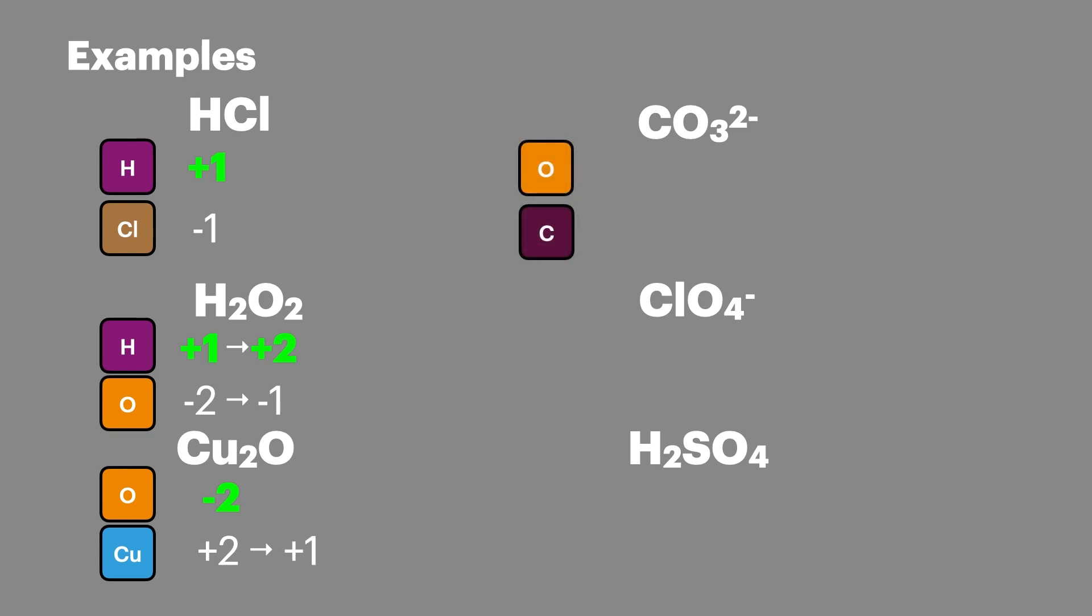Now we'll look at the carbonate ion. Oxygen from the rules will be minus two and because there's three of them this will be minus six overall. We then need to consider the minus two charge on the ion overall and this will mean that carbon will have an oxidation state of plus four.